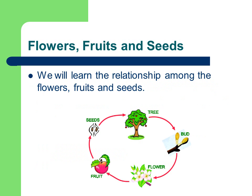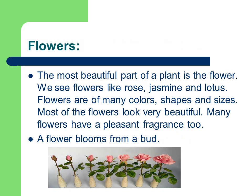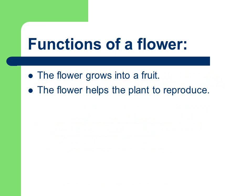Now we learn about flowers, fruits and seeds. There is a very interesting relationship among them. What are the functions of a flower? The flower grows into a fruit — we get fruit from the flower. After the flower dries up we get a fruit. Second, the flower helps the plant to reproduce, meaning to produce its young ones. Reproduction of the plant happens in the flower.